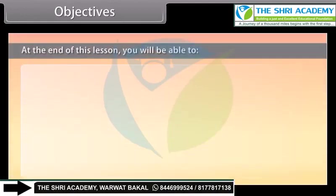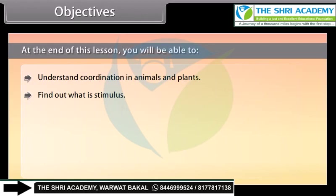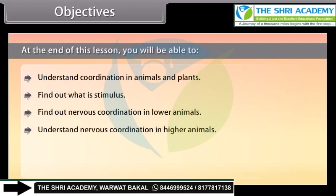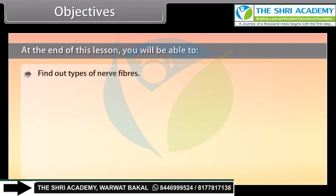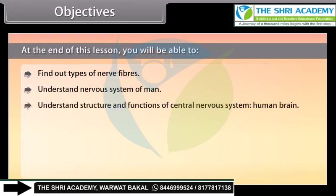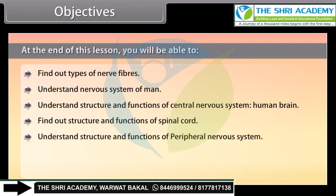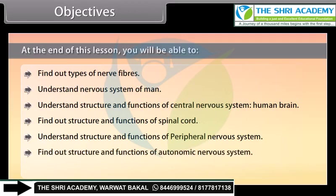At the end of this lesson, you will be able to: understand coordination in animals and plants; find out what a stimulus is; find out nervous coordination in lower animals; understand nervous coordination in higher animals; find out the unit of nervous system; find out types of neurons; find out types of nerve fibers; understand the nervous system of man; understand structure and functions of central nervous system and human brain; find out structure and functions of spinal cord; understand peripheral and autonomic nervous systems; and understand reflex actions.